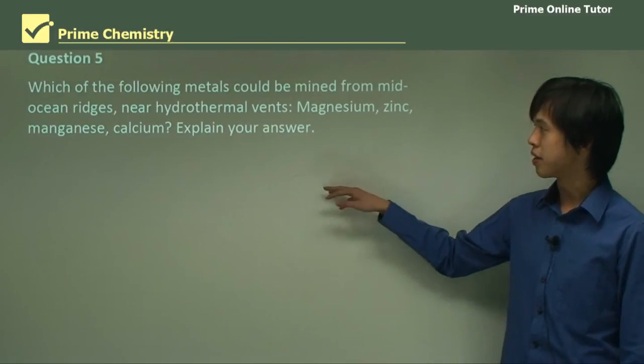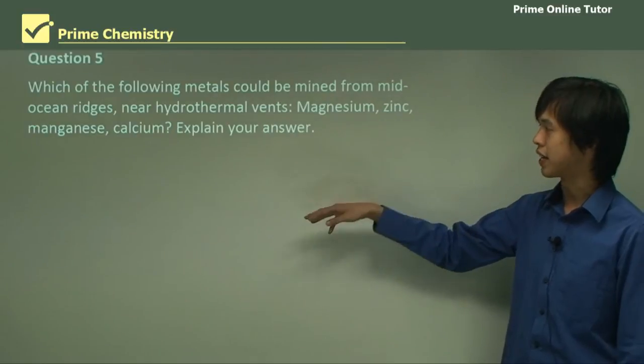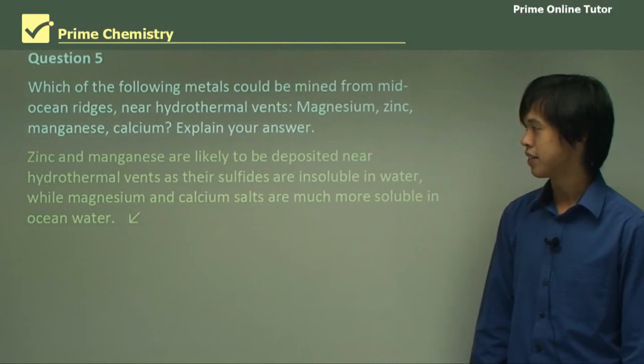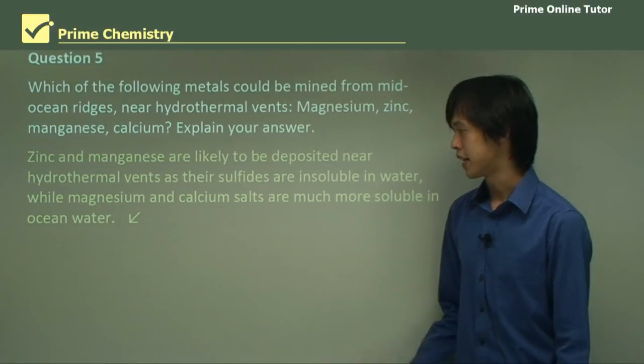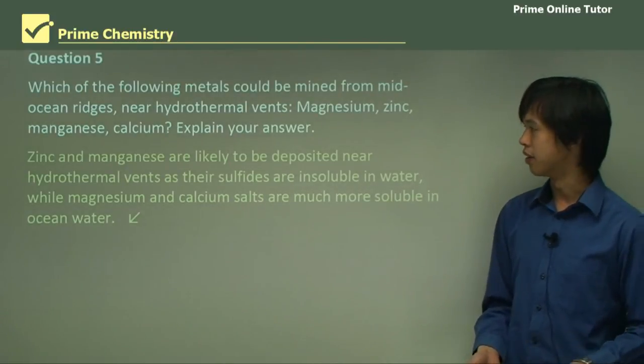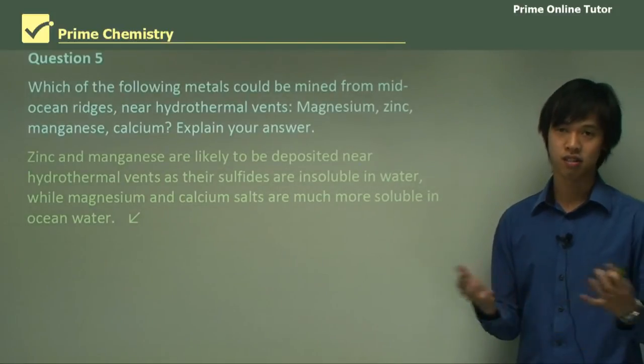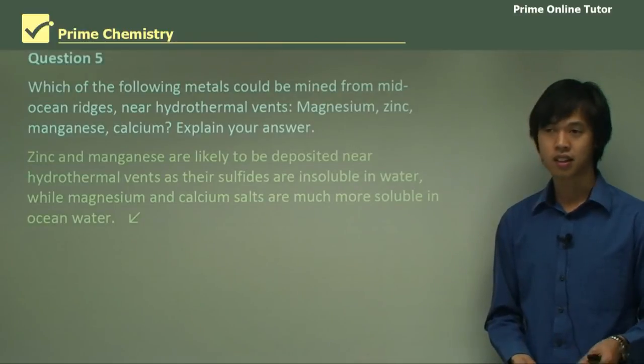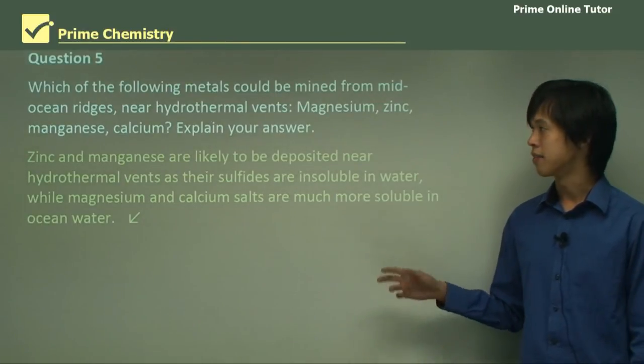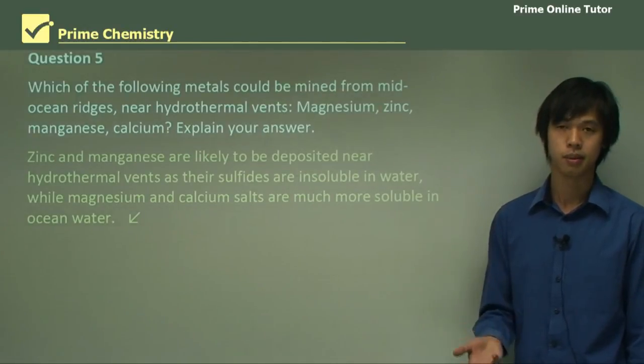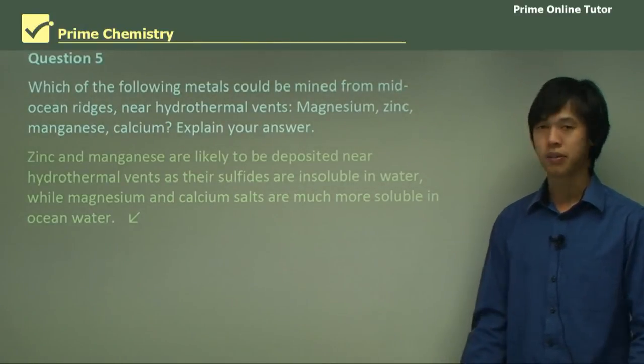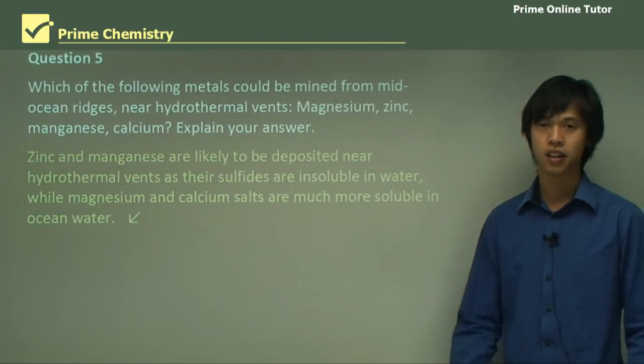Which of the following metals could be mined from mid-ocean ridges near hydrothermal vents? Magnesium, zinc, manganese, or calcium? Explain your answer. Zinc and manganese are likely to be deposited near hydrothermal vents, as their sulfides are insoluble in water, while magnesium and calcium salts are much more soluble in ocean water. If you were to go looking for zinc or manganese deposits at the bottom of the ocean, assuming that you could get there, you'd notice that the sulfides, the zinc and manganese sulfides are insoluble, so you could mine them out and take them away, whereas magnesium sulfides and calcium salts are all soluble, well, mostly soluble in seawater. They'll get transported around and you wouldn't be able to mine them, so to speak. That's why we can mine zinc and manganese, assuming we could find a concentrated enough deposit.